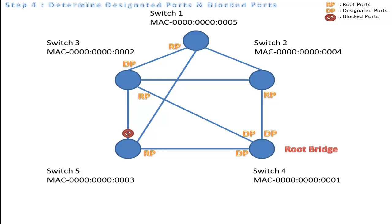The same scenario applies to switch 2. Since the MAC address of switch 3 is smaller, we block the port at switch 2 for the following network. At switch 1, the MAC address of switch 2 and switch 5 is smaller than switch 1, thus we block the port at switch 1 for the following networks.